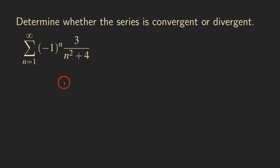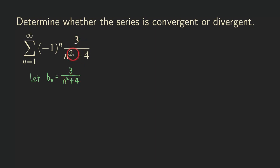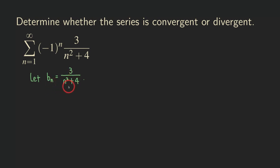Before talking about the two conditions, I should give this factor — three over n squared plus four — a name. Let this be b_n. So b_n equals three over n squared plus four; this is just the portion of the series without the alternating factor. The two conditions from the alternating series test are: one, that b_n is decreasing, and two, that the limit as n goes to infinity of b_n approaches zero.